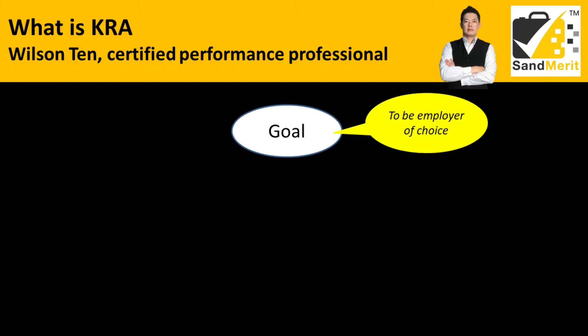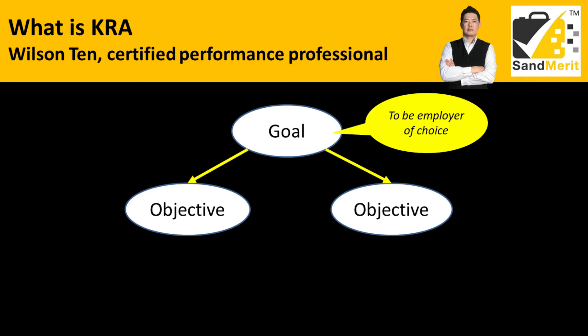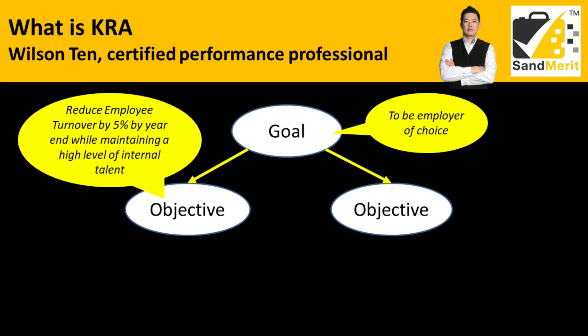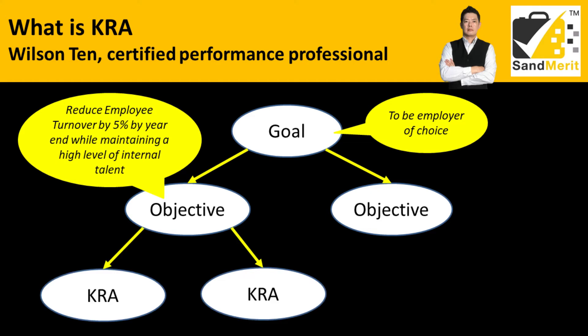For example, if your goal is to be the employer of choice, then from the goal you cascade down into objectives. Objectives are the elements which together achieve the goal. You list out objectives that can help you achieve the goal — for example, to reduce employee turnover by 5% by year-end while maintaining a high level of internal talent. The goals and objectives are set at organization level, then cascaded through the organization to department and even to individual level if applicable.